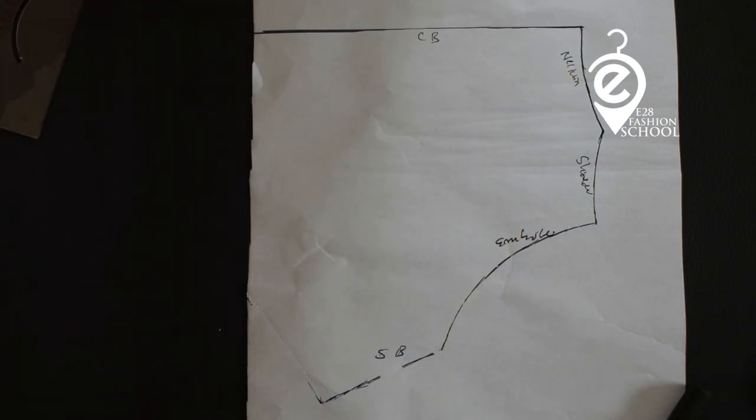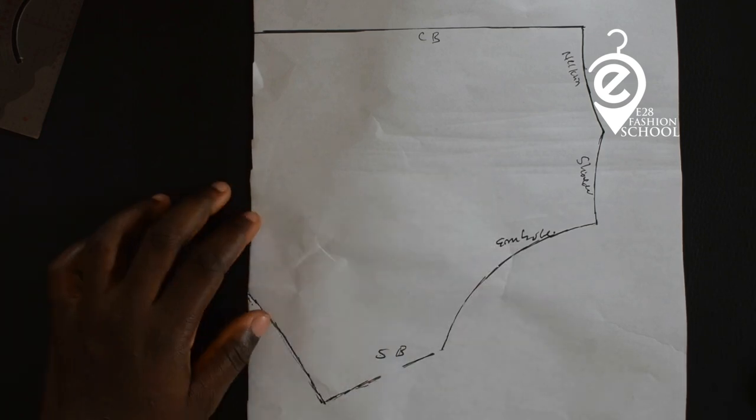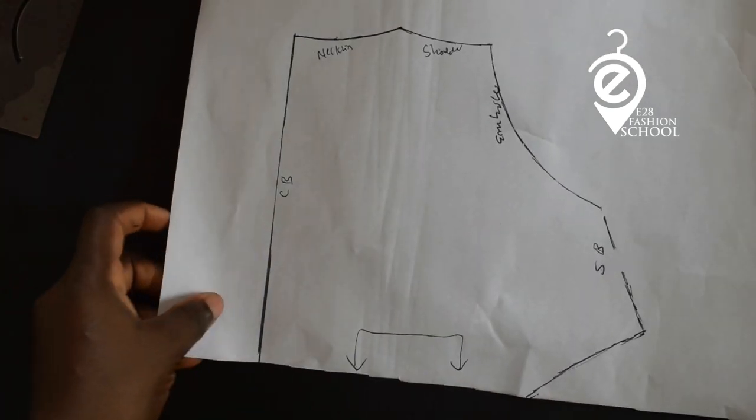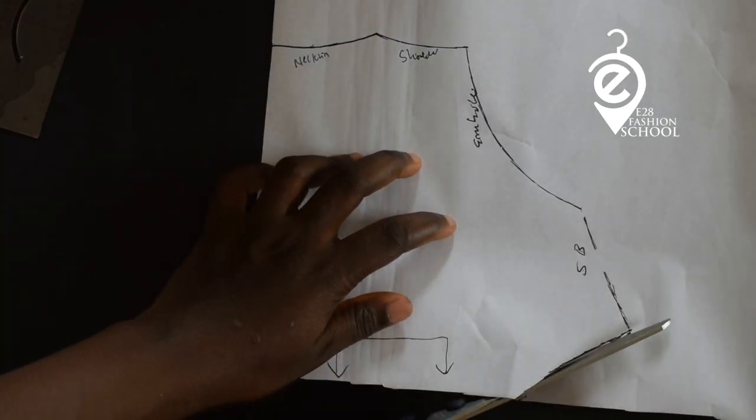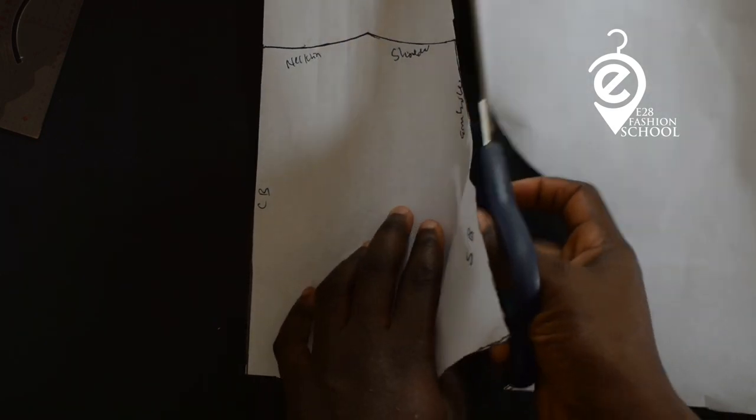Now you can decide to add your seam allowance on this new paper if you want. That white space is where you cut on fold, that is the mark for the center fold area seam. The next thing you do is cut out your pattern.